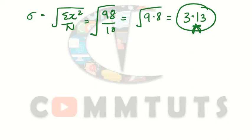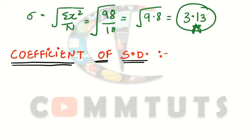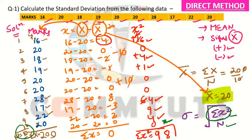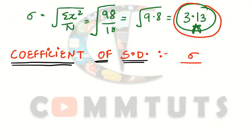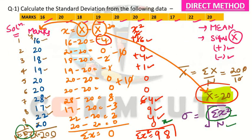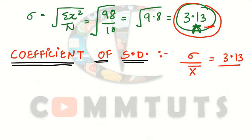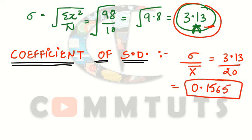Next, we calculate the coefficient of standard deviation. The formula is: Coefficient of SD = Standard Deviation / x̄ (arithmetic mean). Our standard deviation is 3.13 and our arithmetic mean is 20. So the coefficient = 3.13 / 20 = 0.1565.